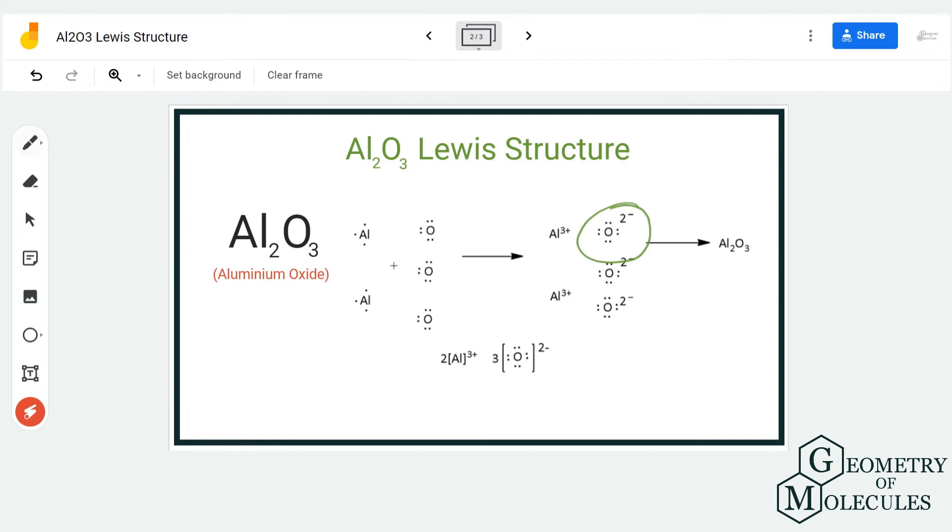So we have this. Now, if you have to write the Lewis structure for this, you can write it like this: Al has a plus three charge and O has a minus two charge. You have to write the coefficients, though, as there are two aluminum atoms, two over here, and three oxygen atoms, three over here.